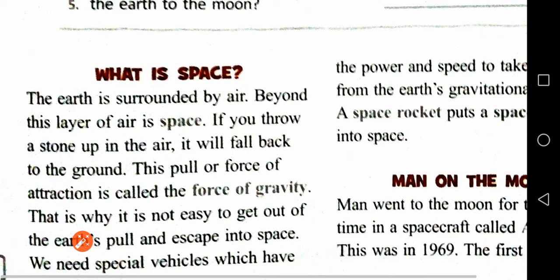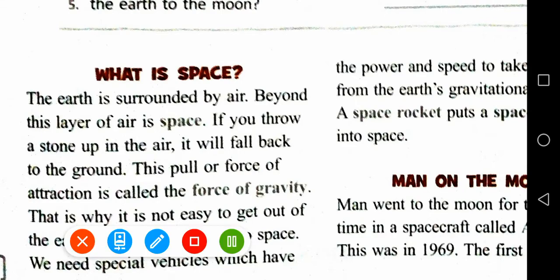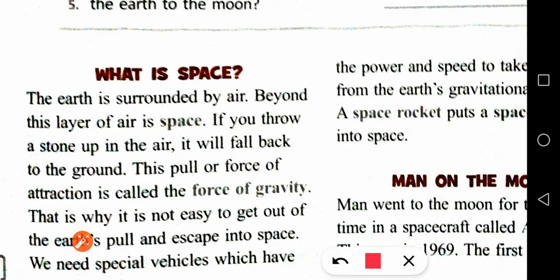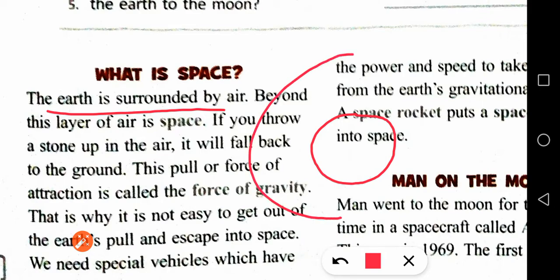So what is space? The Earth is surrounded by air. The area of air around the Earth is called the atmosphere. So from the Earth, you will find atmosphere, and in the atmosphere you will get air.